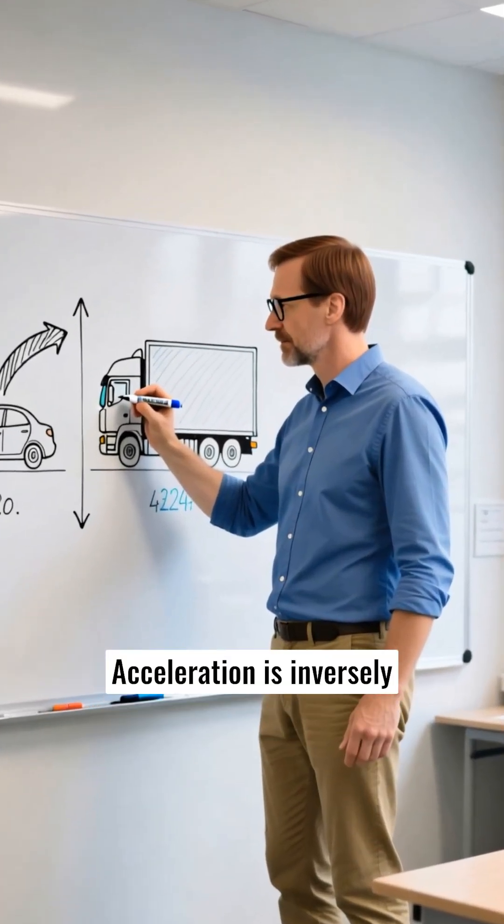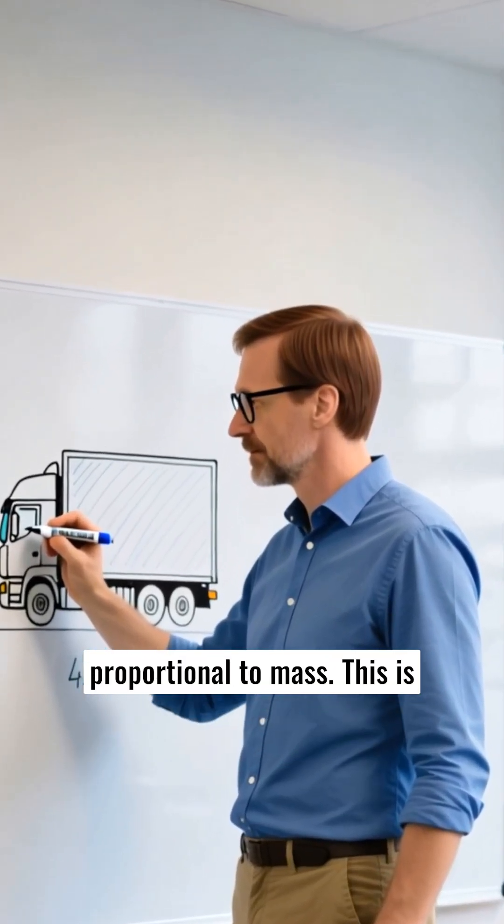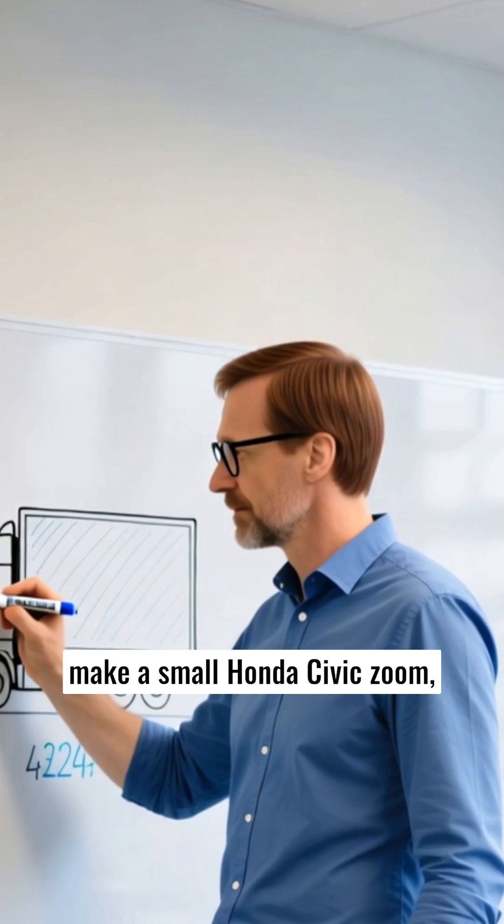Acceleration is inversely proportional to mass. This is why the same engine force can make a small Honda Civic zoom, but a massive semi-truck crawl.